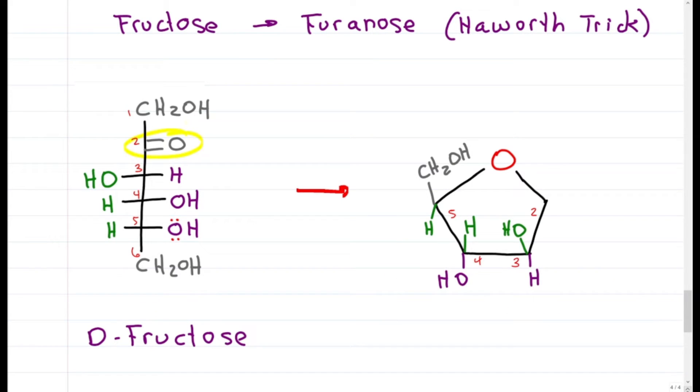As for carbon 2, since the carbonyl was sp2 and flat, once again we get alpha down or beta up, specifically looking at the position of the OH. And carbon 1 just goes opposite.